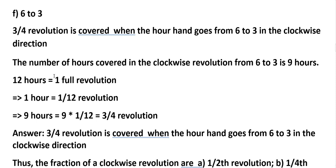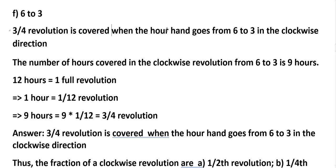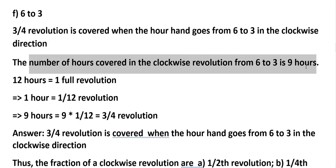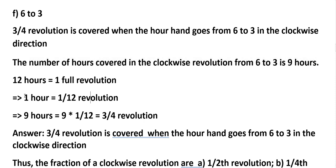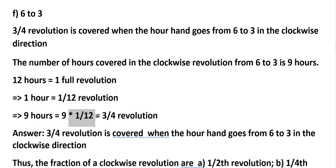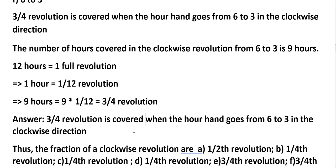F: 6 to 3. Three-fourths revolution is covered when the hour hand goes from 6 to 3 in the clockwise direction. The number of hours covered in the clockwise direction is 9 hours. So 1 hour equals 1/12, 9 hours equals 9 × 1/12. That is: 9 divided by 3 gives 3, and 12 divided by 3 gives 4, so 3/4 revolution. Answer: 3/4 revolution covered when the hour hand goes from 6 to 3 clockwise.